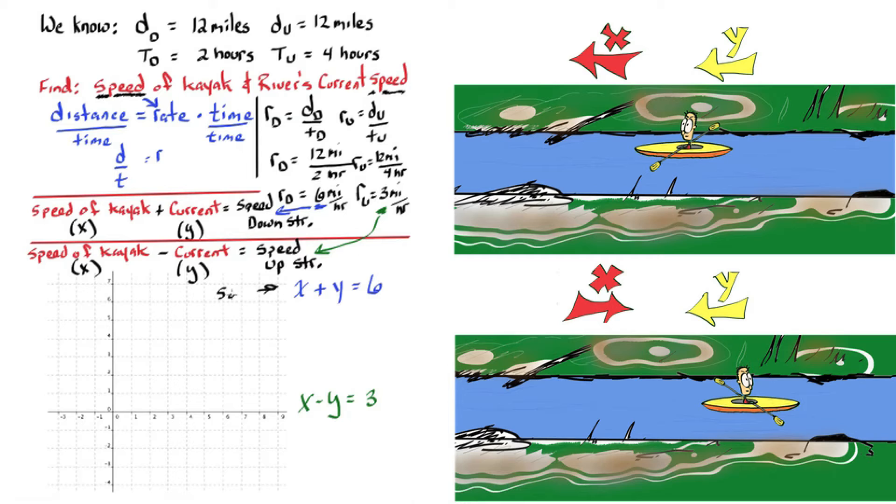We can solve for y and put it in slope intercept form. Find our y-intercept, plot the point on the graph, and then use our slope to graph both lines.